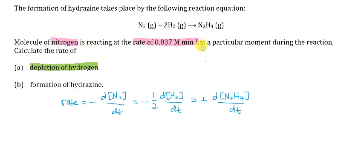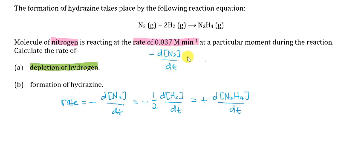The question gives you the rate of nitrogen: 0.037 molar per minute. Note that this one is in minutes, not seconds. Since nitrogen is our reactant, it decreases with time, so this is the rate of disappearance of nitrogen: negative d[N2]/dt equals 0.037 molar per minute.